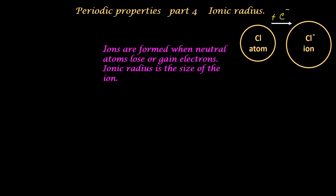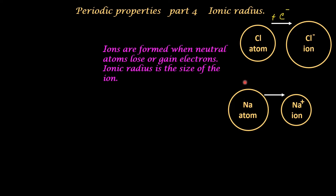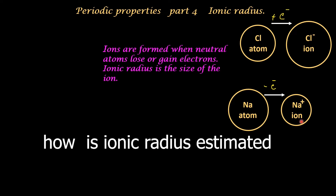The chlorine atom gets the extra electron from the sodium atom. The sodium atom loses one electron and becomes the cation, that is, the sodium-plus ion. The cation is smaller than the anion. In ionic compounds, the atomic orbitals of the participating atoms do not overlap while forming the bond, and the ions formed are of different sizes.